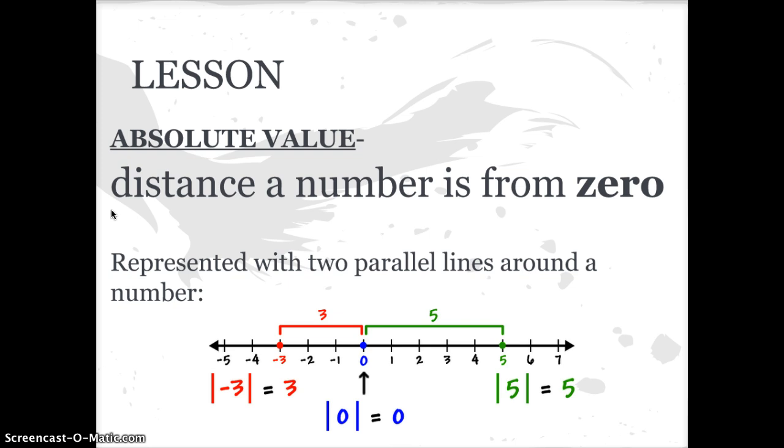Absolute value is the distance a number is away from zero. If you look at this number line, the absolute value of five is five because it is five units away from zero, and the absolute value of negative three is just three. It's not negative three, it's just three.